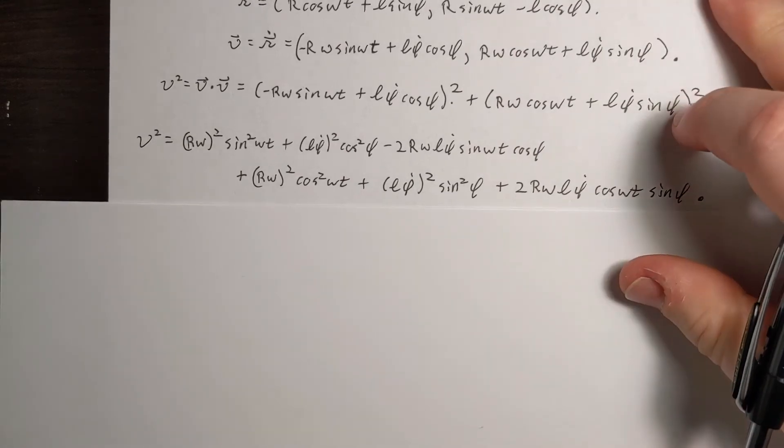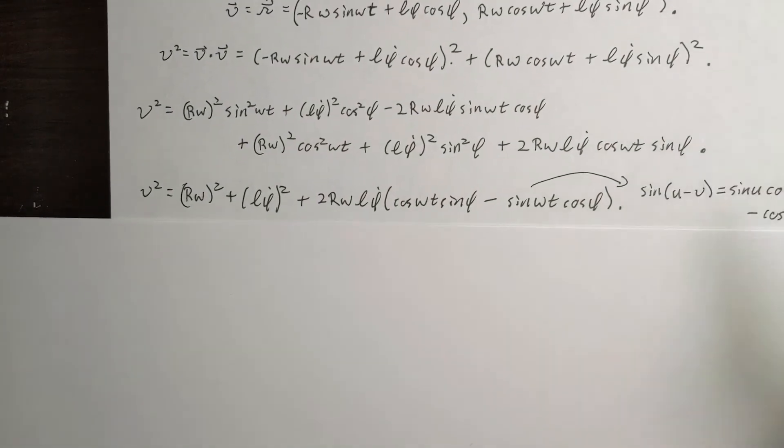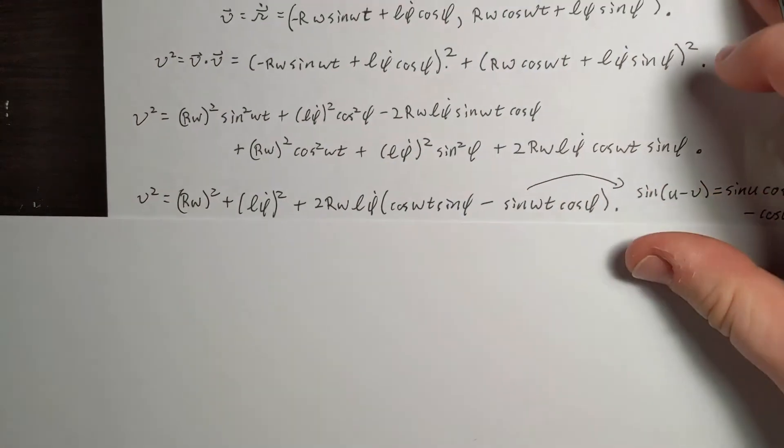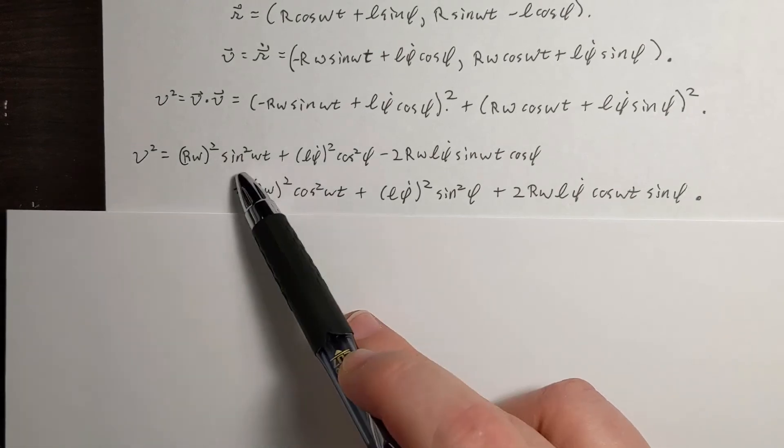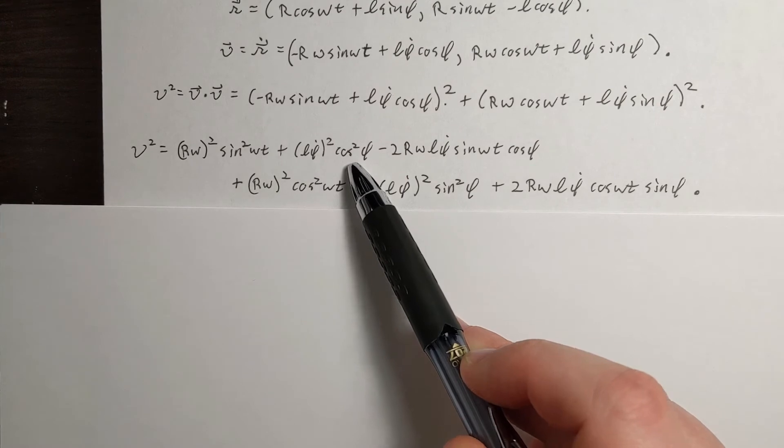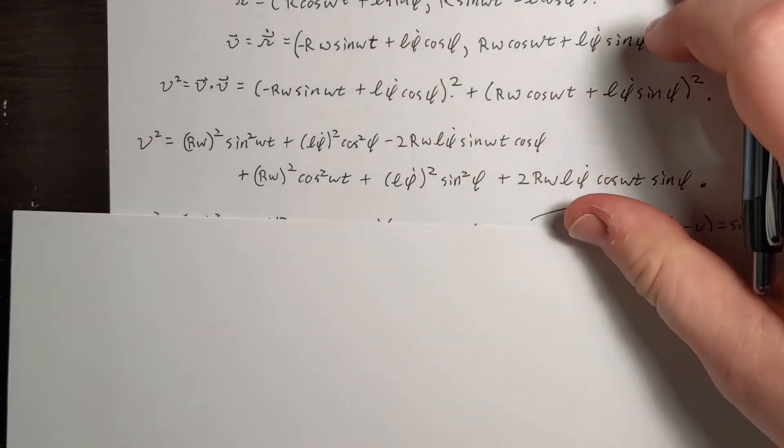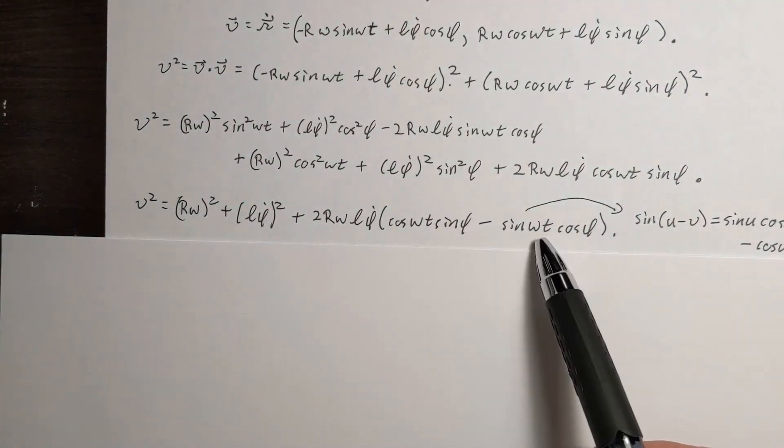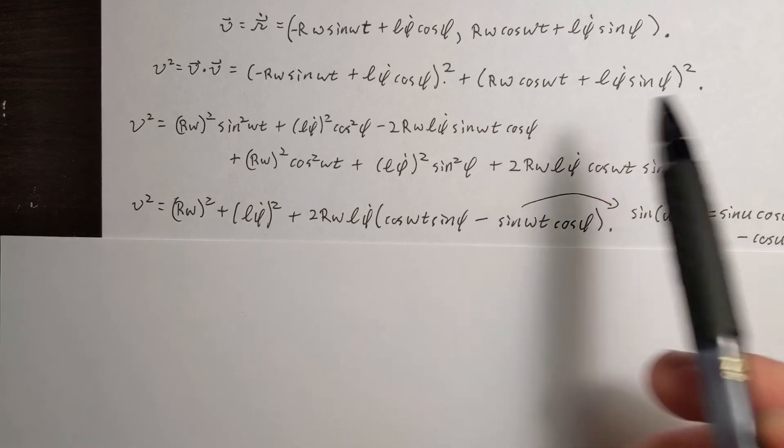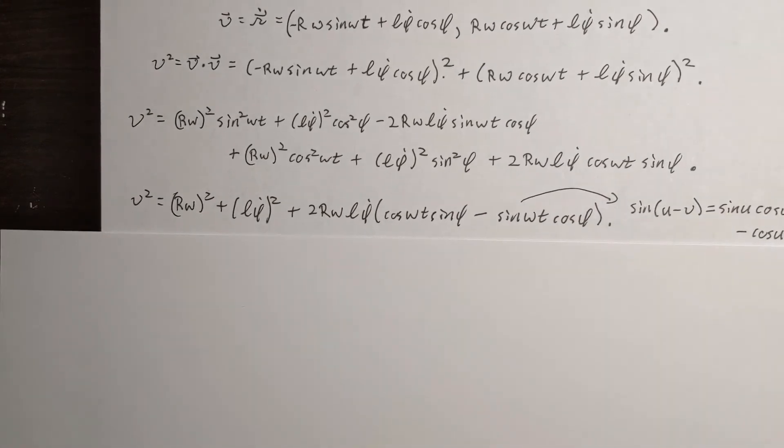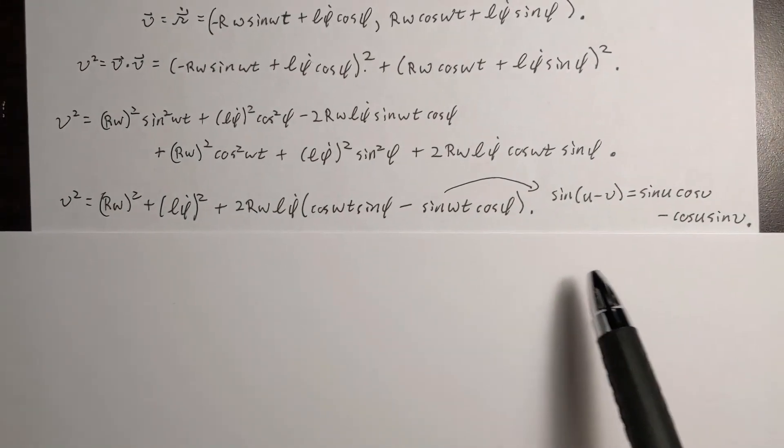So now we can find the kinetic energy after we group terms. So you can see we can group these terms here. The sine squared omega t plus cosine squared omega t is going to add together to be one. Cosine squared phi plus sine squared phi will add together to be one. We're bringing down, we're then left with this, which is the addition of cosine omega t sine phi plus sine omega t cosine phi. Or rather minus.